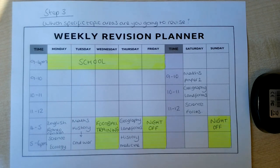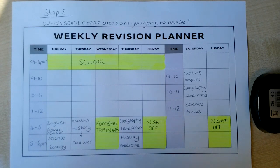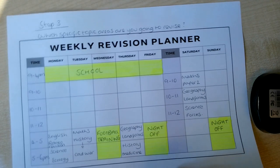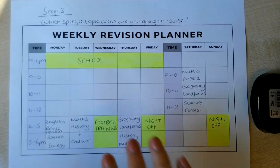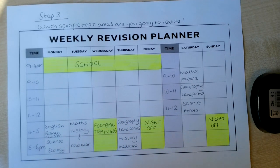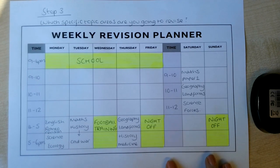There are a number of revision guides available in school that can be bought from the school shop, or you can also buy them online. It's really important that students take some initiative to speak to teachers, and if they need past papers, flashcards or anything like that, we can support them with that in school. So step three is looking at specifically what subjects, how long for, and then what particular unit of work they're going to focus on.